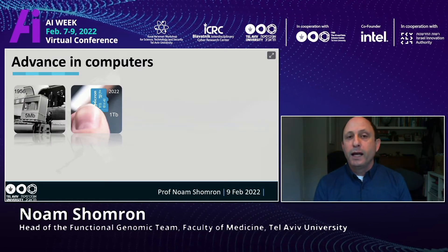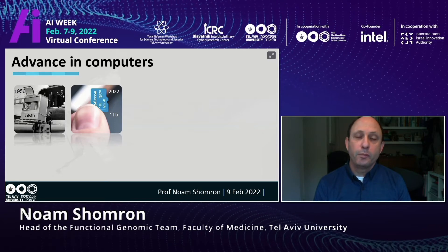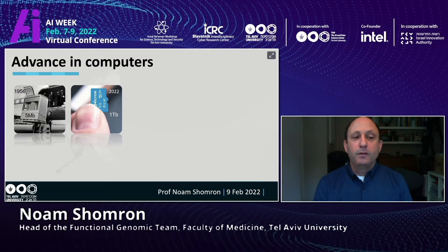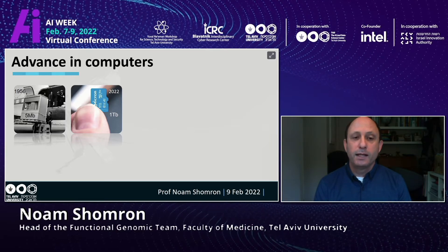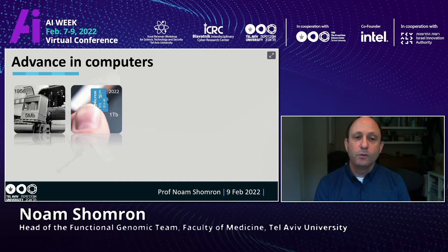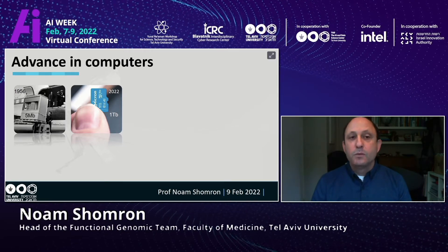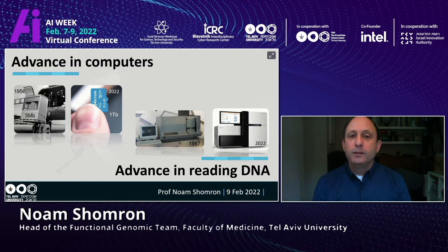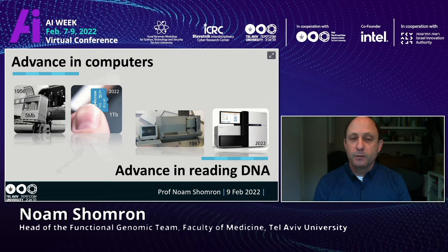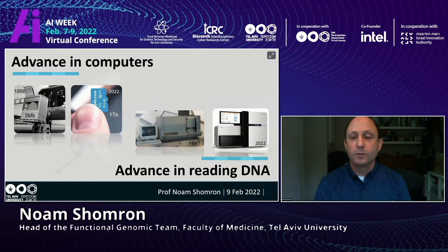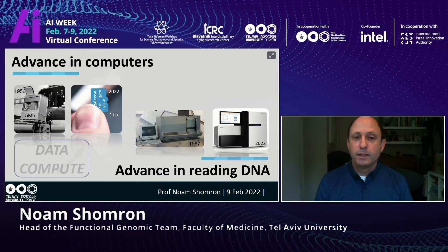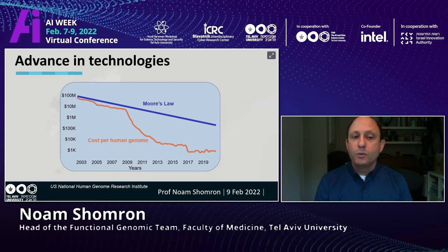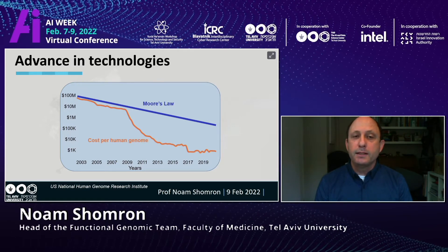We rely on two technologies. One is the advance in computer power and storage — five megabytes on the left-hand side amounted to about one ton in size, and about 60 years later, one terabyte fits in the palm of your hand. The other technology is our ability to read DNA. On the left you can see the first automatic DNA sequencer from 1987 — Sanger sequencing. On the right is what we use today: second-generation sequencing. If we plot both on the same graph, you can see Moore's law and the exponentially decreasing cost per human DNA sequenced.